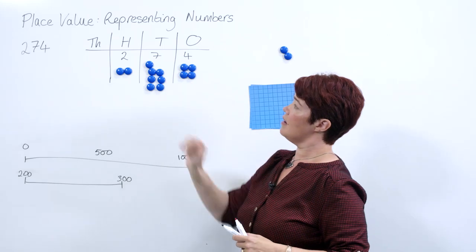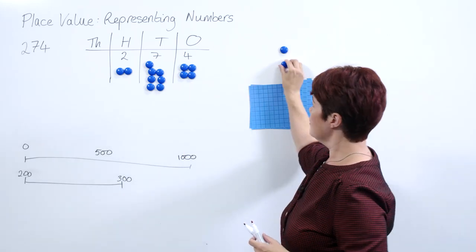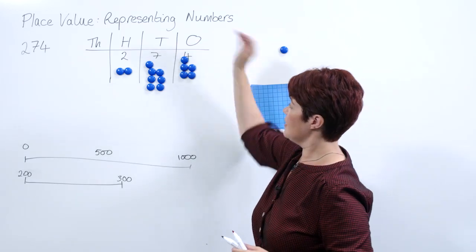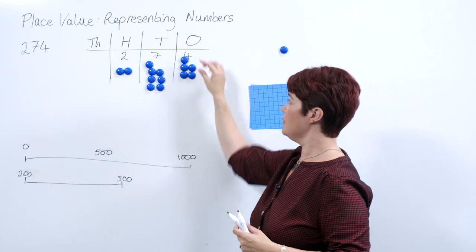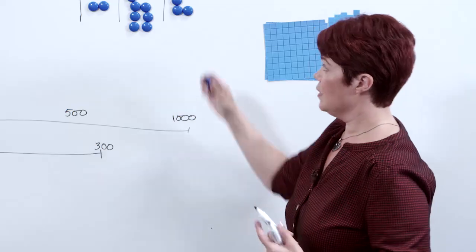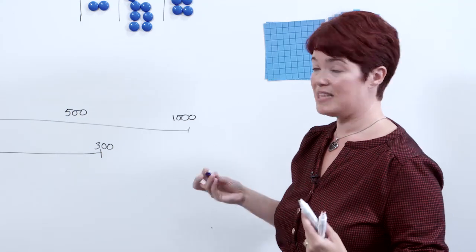As well as using our counters, we could then use other counters to add in and explore that place value. If we put an extra one here, we can be asking the children what's that number now? If we take one away, what's that number? So lots of opportunities for them to investigate.